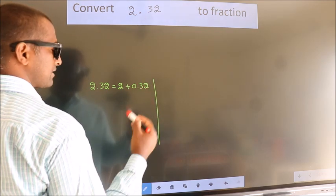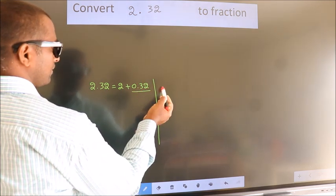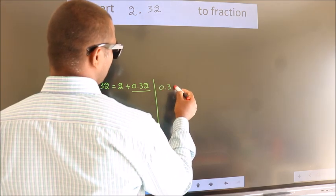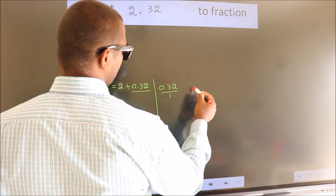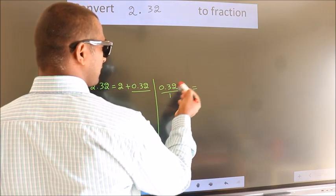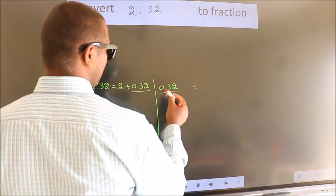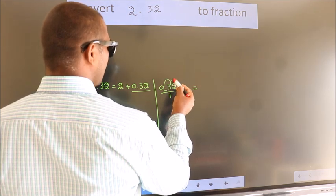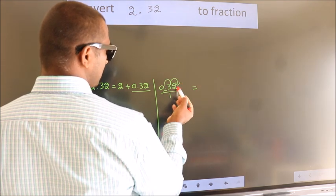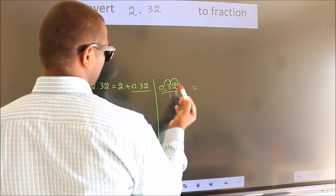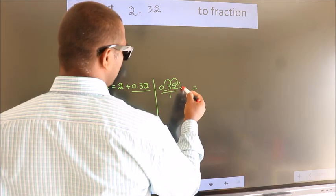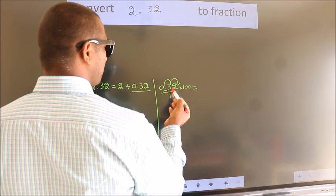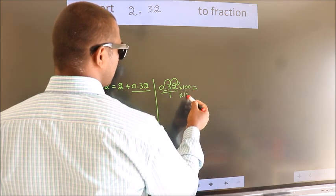Next, convert this to fraction over here. So 0.32. Next, to convert this to fraction, we have to move this decimal after 1, 2 numbers. To move this decimal after 2 numbers, we have to multiply it with 100. Whatever we are multiplying in the numerator, in the denominator also do the same.